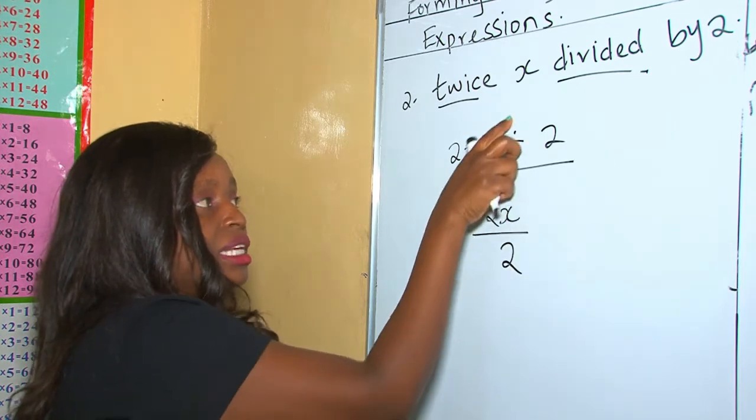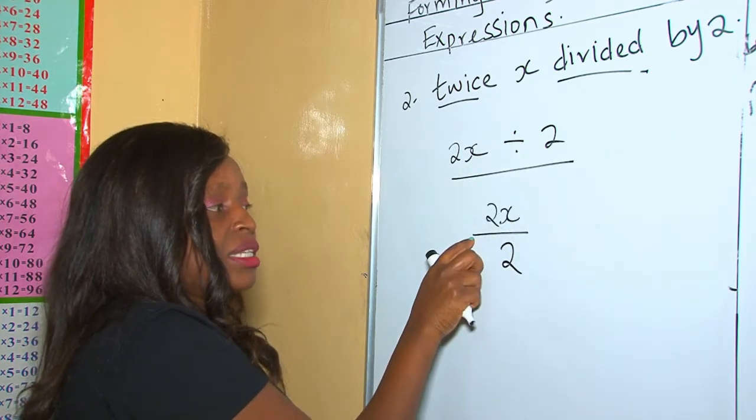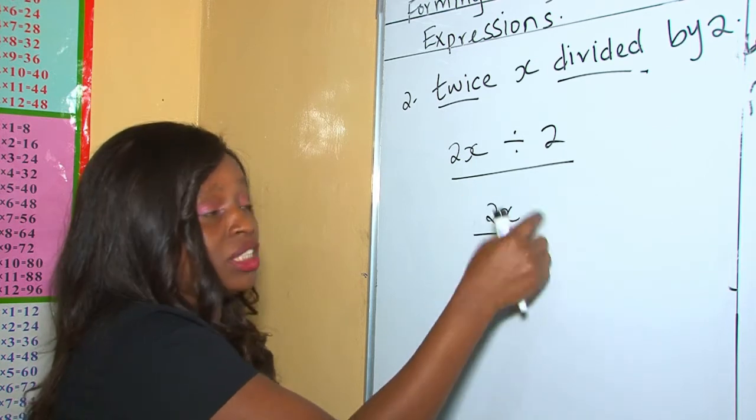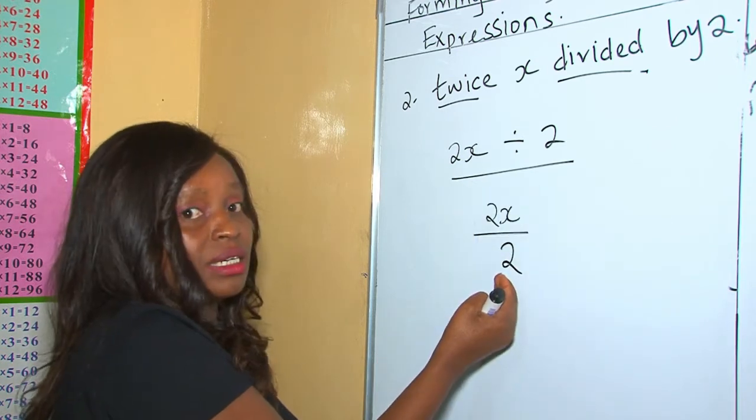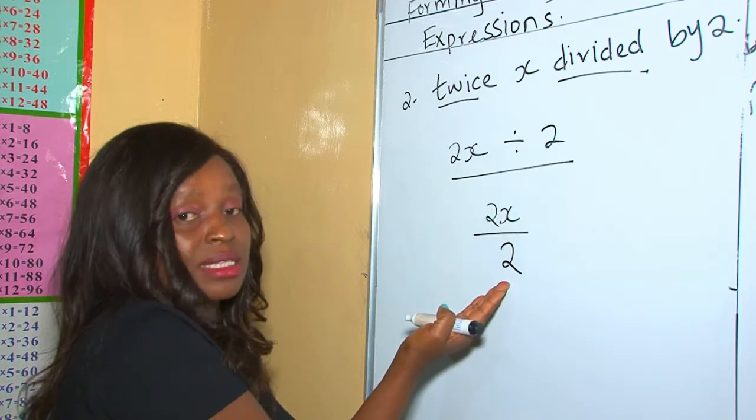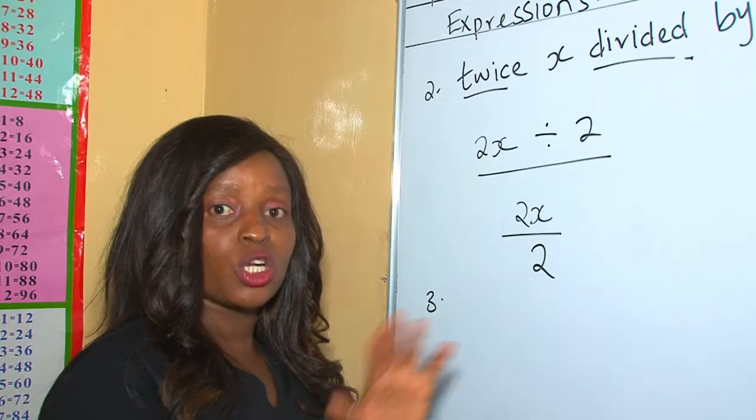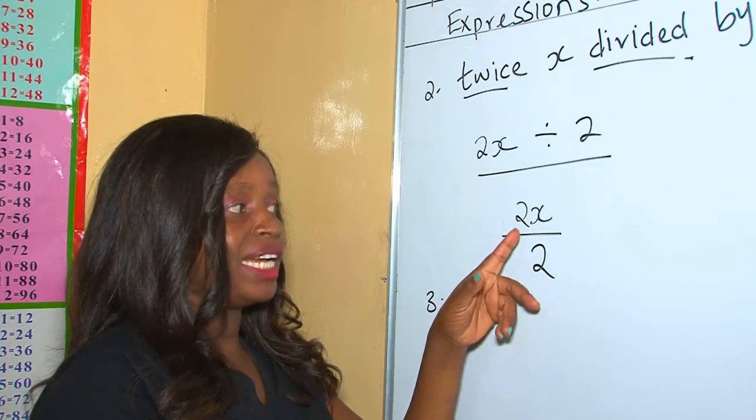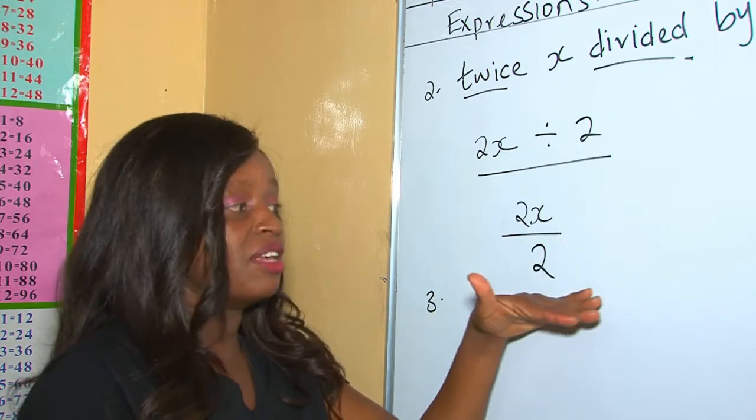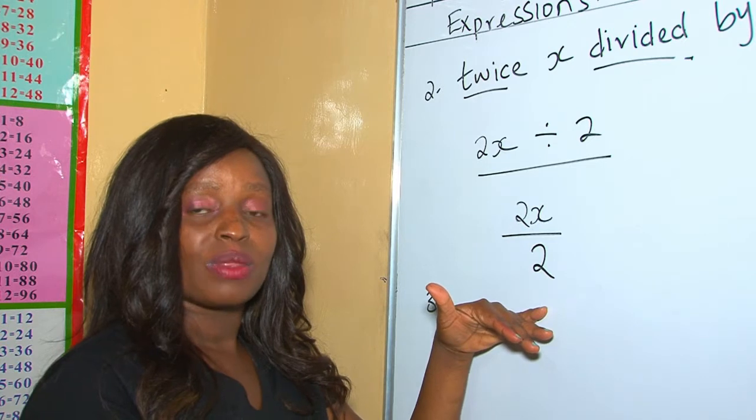You can as well write it this way: 2x, or twice x, divided by 2. Remember, this division is the same division as this one. It comes to fraction. It means numerator divided by denominator. So also this means the same as this one. In this case, no simplification. So don't start saying by 2 by 2, then the answer is x. Just leave it there like that as an expression.